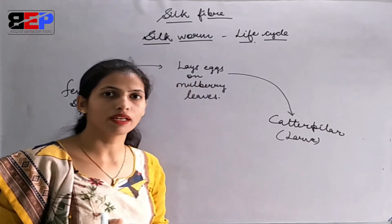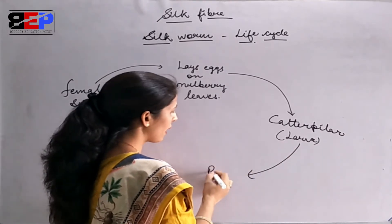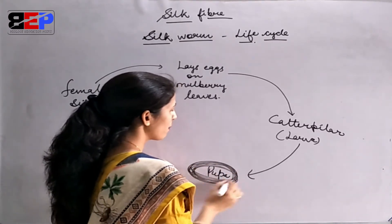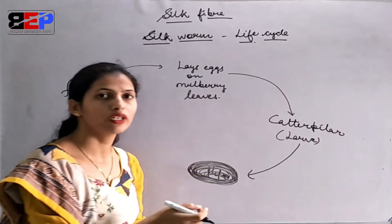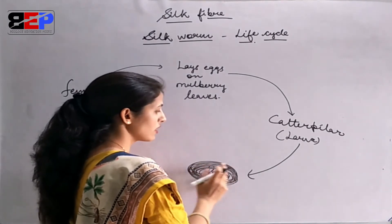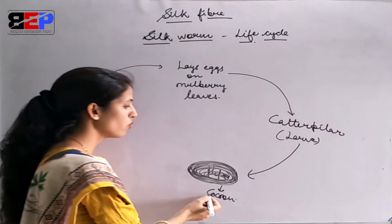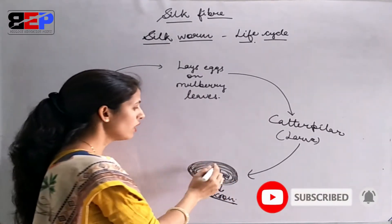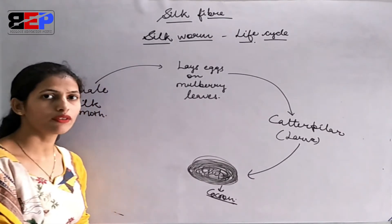When the fluid comes in contact with air, it is converted into a solid form. The caterpillar, after the larva stage, enters the pupa stage. Around the pupa, the silk fiber wraps, because the caterpillar in the pupa stage secretes and forms a cocoon-like structure. This is called a cocoon.